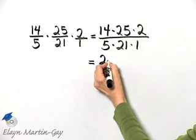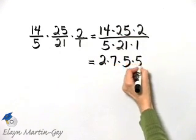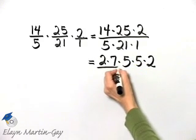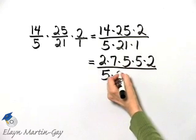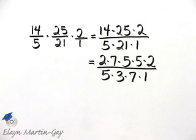14 is 2 times 7. 25 is 5 times 5. And then I have 2. What do we have in the denominator? 5 times 21 is 3 times 7 as a product of primes, and then I have times 1.